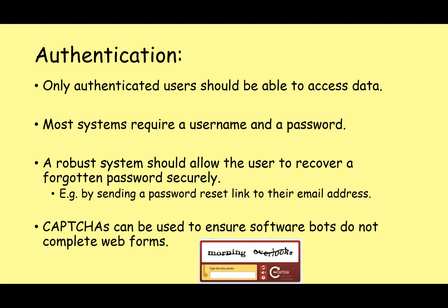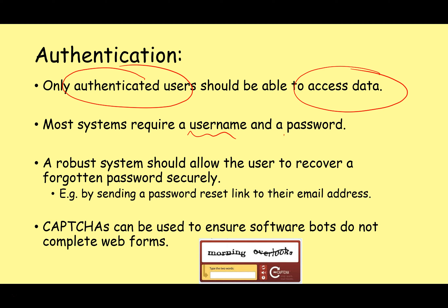Speaking of authentication, let's go through that in a little bit more detail. Only authenticated users should be able to access data. Most systems do this by requiring a username and password — the classic authentication system. But as a programmer and designer of software, you need to think a little beyond this. For example, a robust system should allow the user to recover a forgotten password securely, usually by sending a password reset link to a previously registered email address. You've also got to think about captchas — these are used to ensure that software bots do not complete web forms and pretend they're humans, helping make sure it's a real human who's trying to register or log on, and not a piece of software.